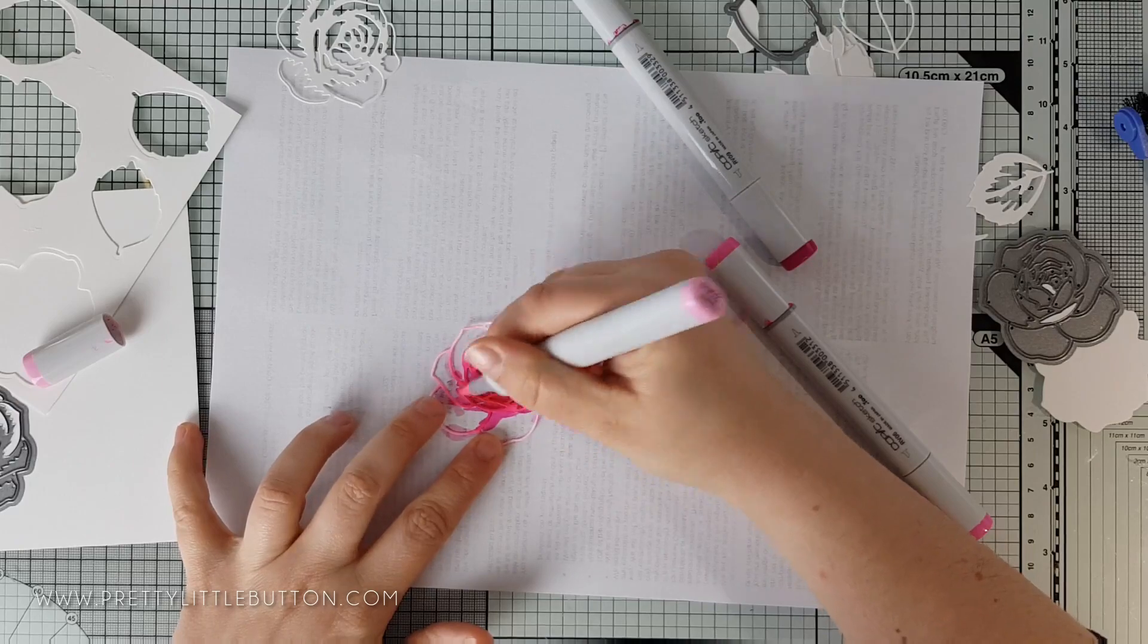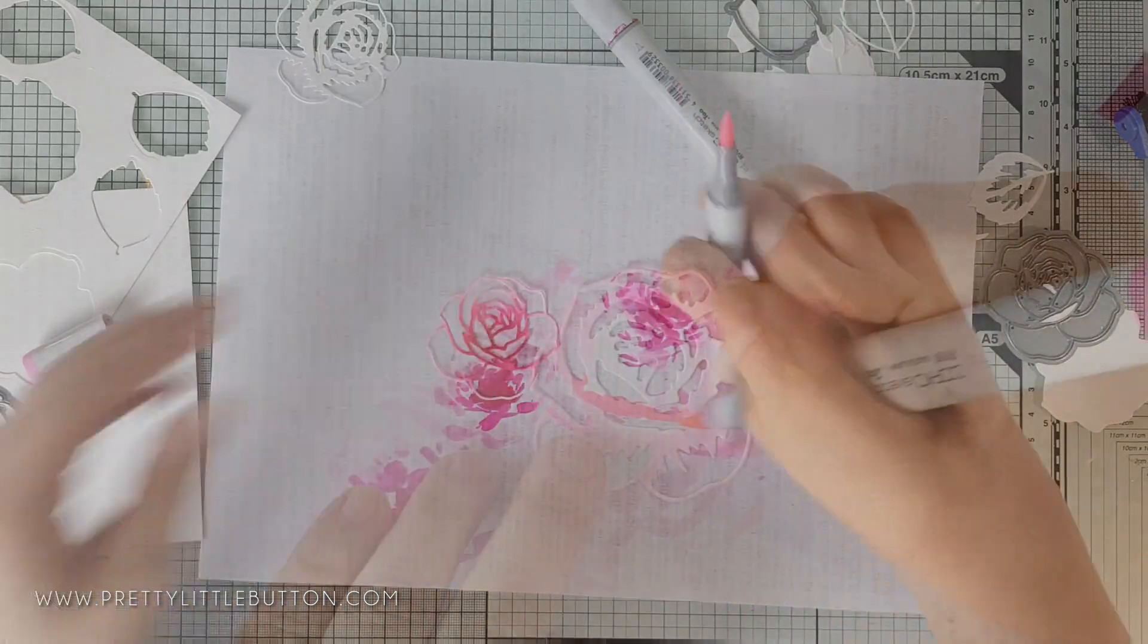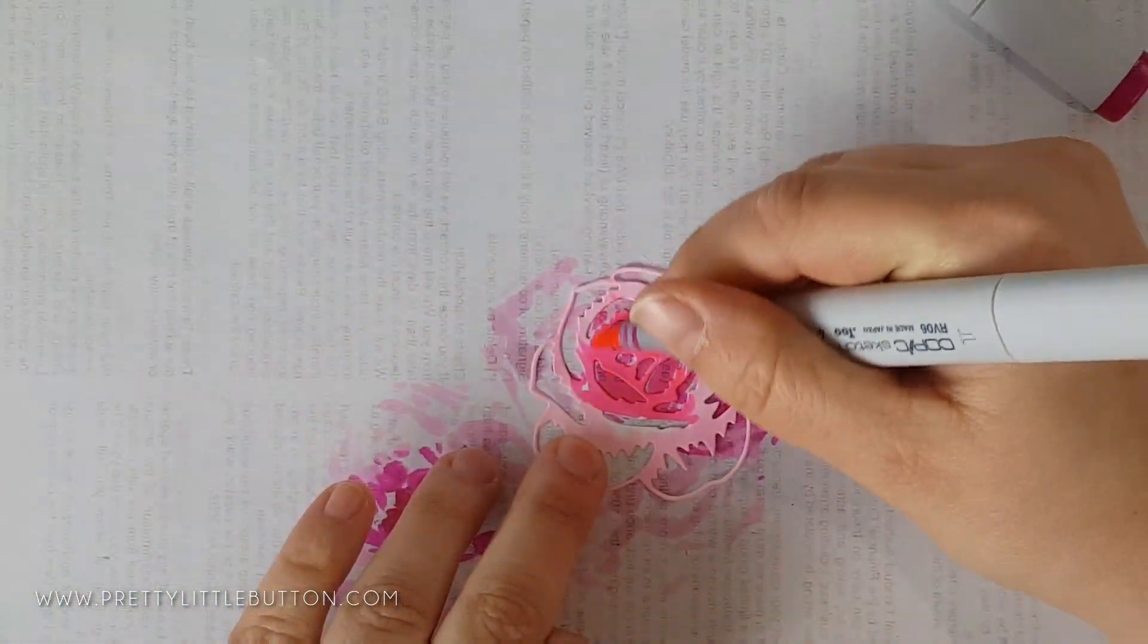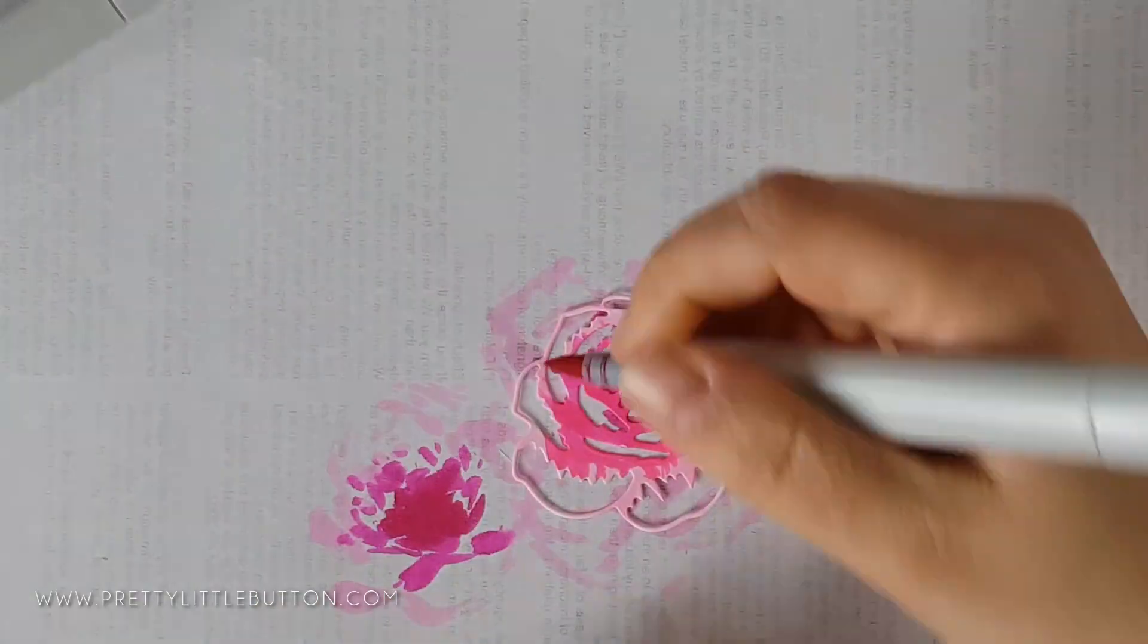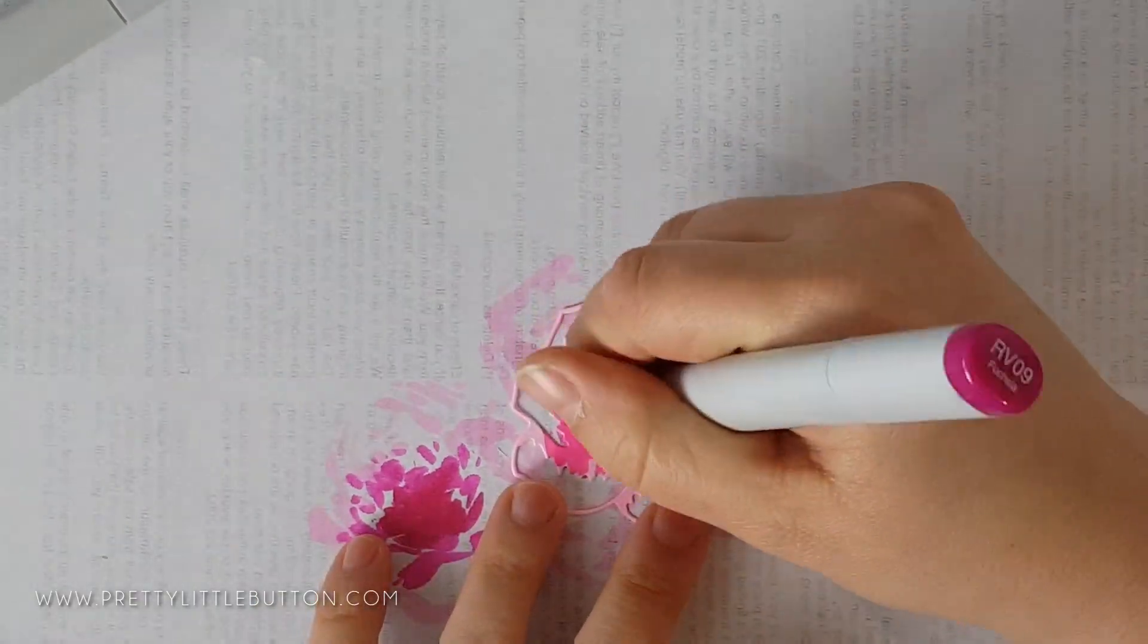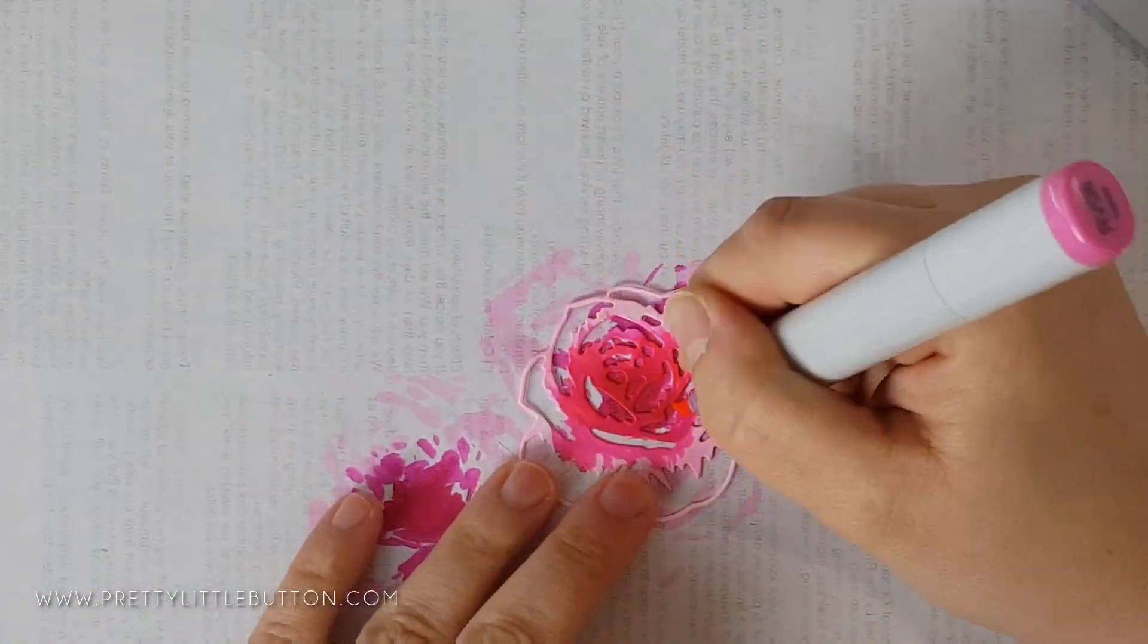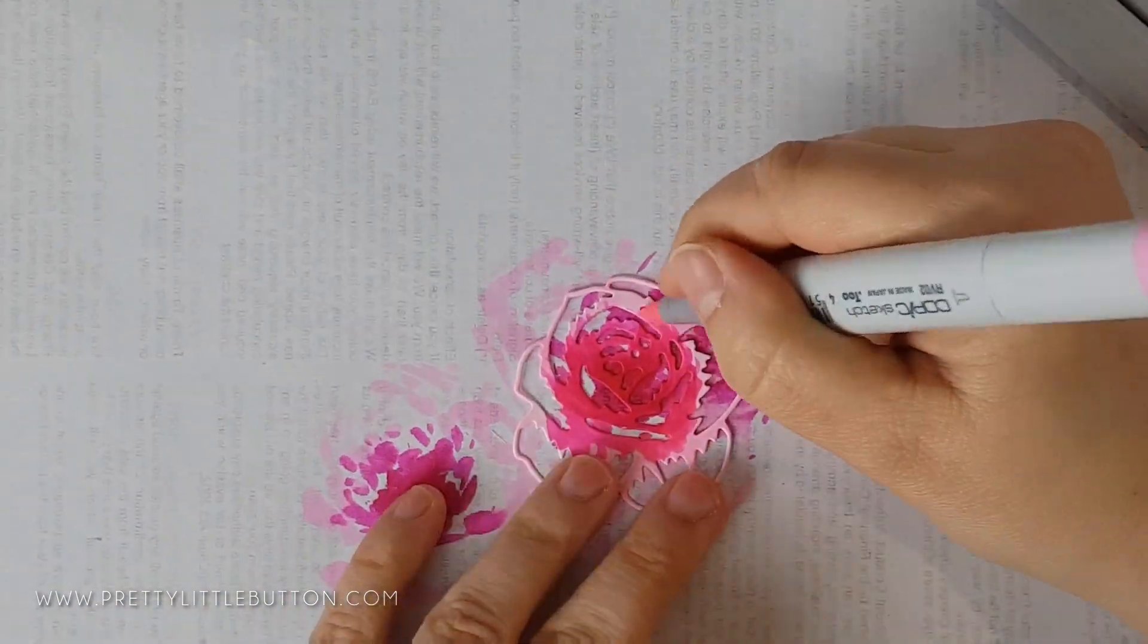Although the outline die cut is quite delicate, it is still easy enough to color in using this method. I repeated this step with the second layer of the rose die, which has some areas with more space, so this allows you to add more color and gives you more areas to blend on.